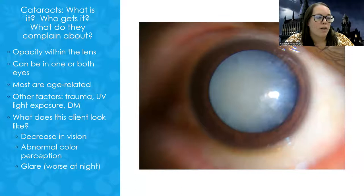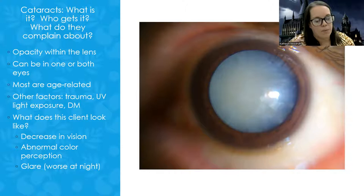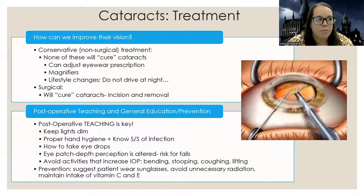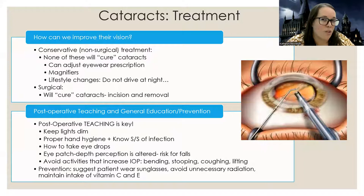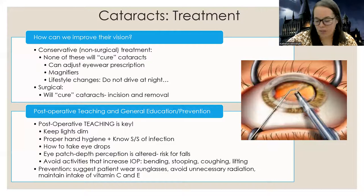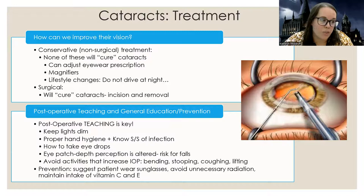Patients come in complaining that they're not seeing as well. They may say they're not seeing colors specifically as well, and they may complain of glare, especially worse at night. These patients may not want to drive at night. Treatment can be conservative or surgical. Conservative options include going up on the eyewear prescription as vision gets worse, using magnifiers, and lifestyle changes like not driving at night. Most people will go for incision and removal of the cataract — they literally go in and cut out and remove the cataract so the patient can see again.